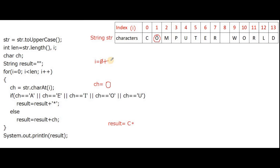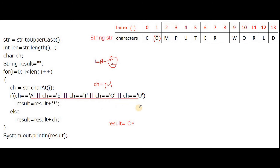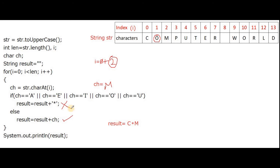i++ so i is now 2. CH = str.charAt(2). From position 2, the character is 'M'. The value of CH is capital letter M. Checking whether M is a vowel — of course M is not a vowel. So the if-part will not execute, and the else part executes: result = result + CH. Result was already C*, and now M is concatenated, giving C*M.